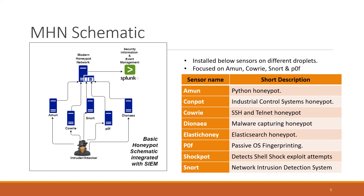This is the MHN schematic. I deployed a single sensor on every droplet to avoid issues like high resource utilization. Initially I installed Dionaea and the storage was getting full every two or three days, so later I decided to install one sensor on one droplet only. These are the sensors which Modern Honeypot Network offers — we can download them directly using the wget script present in MHN. I focused more on Amun, Cowrie, Snort, and p0f.